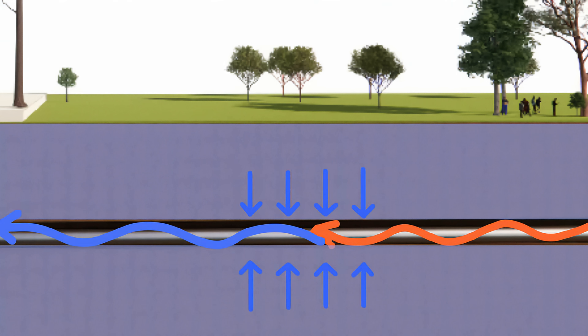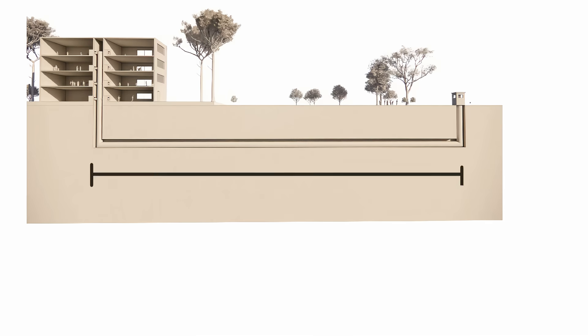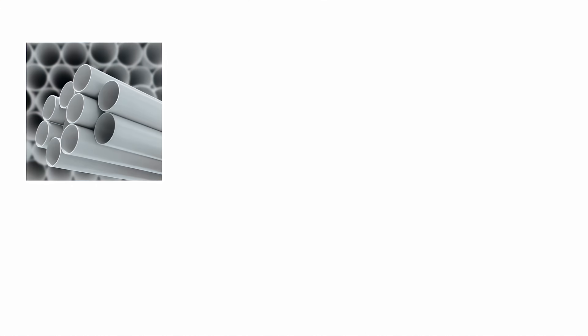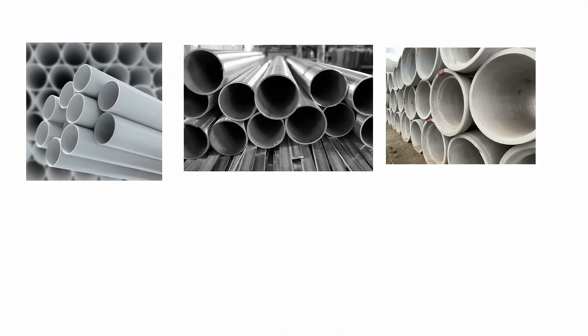Pipes should be buried at least 5 to 10 feet deep, where the temperature remains stable. A typical system runs between 65 to 165 feet long. For the pipe material, PVC is cost-effective, metal is durable, and concrete offers long-term reliability. A diameter of 150 to 300 millimeters ensures good airflow.